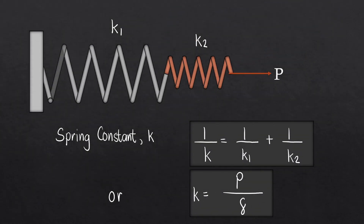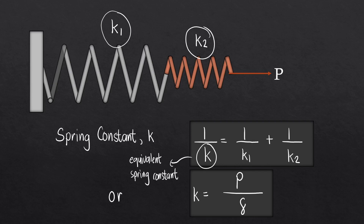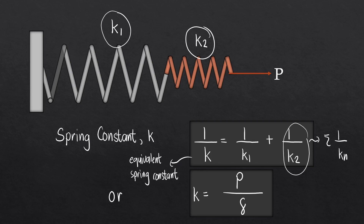In this example, we have two springs in series with the spring constant of the first spring equal to k1, and the spring constant of the second spring equal to k2. To get the equivalent spring constant k, we use the formula: 1 over k equals the summation of 1 over k1 plus 1 over k2. This is a summation, so if you have 3 springs, you add another 1 over k for the third spring.